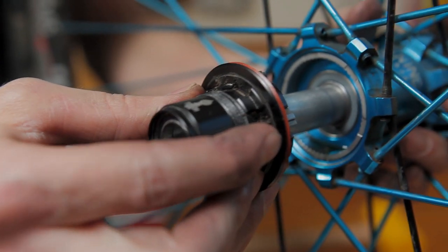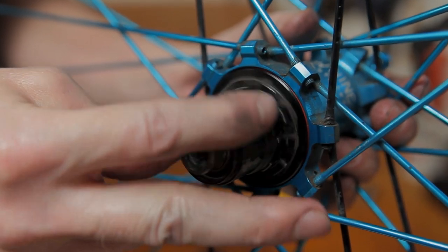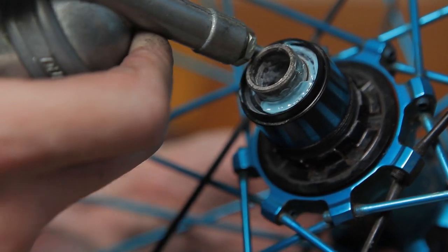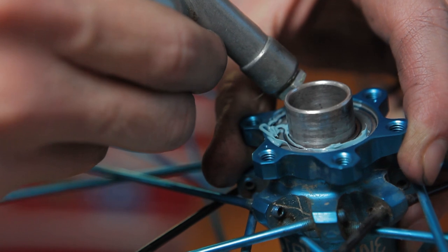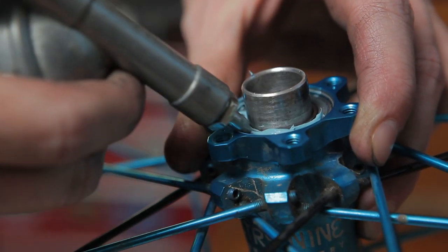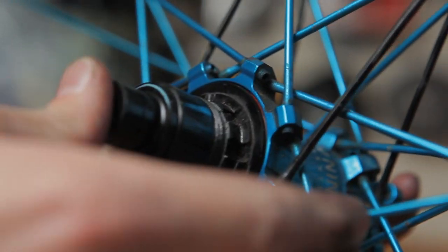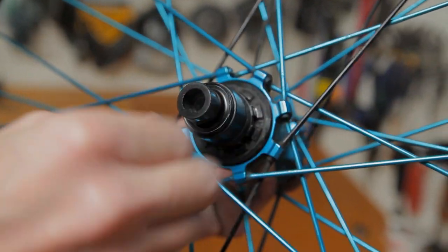Turn your freehub counterclockwise as you apply inward pressure to reinstall. Apply a thin layer of grease to both outboard bearings before reinstalling end caps. Wipe away any excess grease once end caps are reinstalled.